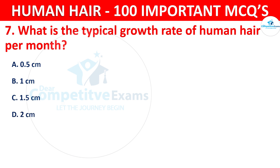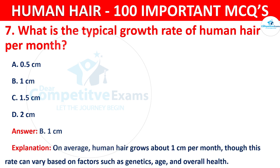The correct answer is B — 1 cm. On average, human hair grows about 1 cm per month, though this rate can vary based on factors such as genetics, age, and overall health.